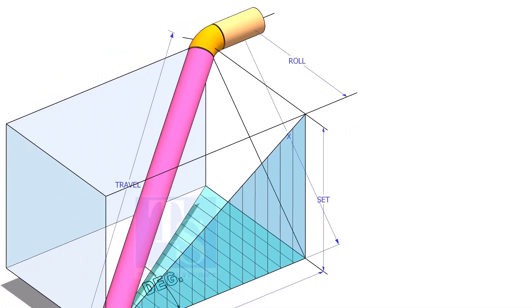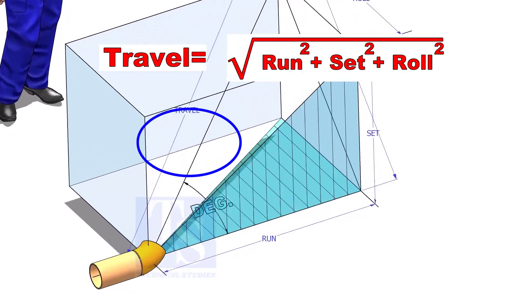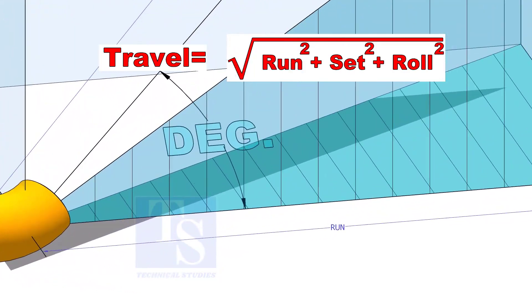The formula to calculate the travel length is root of the sum of the run, set and roll.